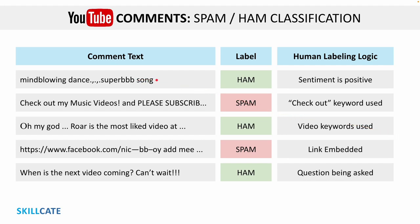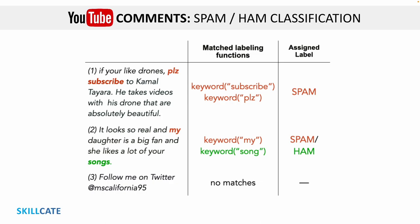For example, genuine comments may have users appreciating the content, maybe asking questions or just posting their observations. On the other hand, spam comments generally have promotional content with links embedded, which is mostly irrelevant to the context of the video. Now think about it — if I could write a set of functions to identify these patterns in our data the same way we would otherwise do by manually going through each of these comments, wouldn't that be great? And that really is the basic premise of programmatic labeling. The functions that we shall write as part of Snorkel-based programmatic labeling are called labeling functions. These labeling functions capture the labeling rationale of a human and can be applied to auto-label large training datasets.